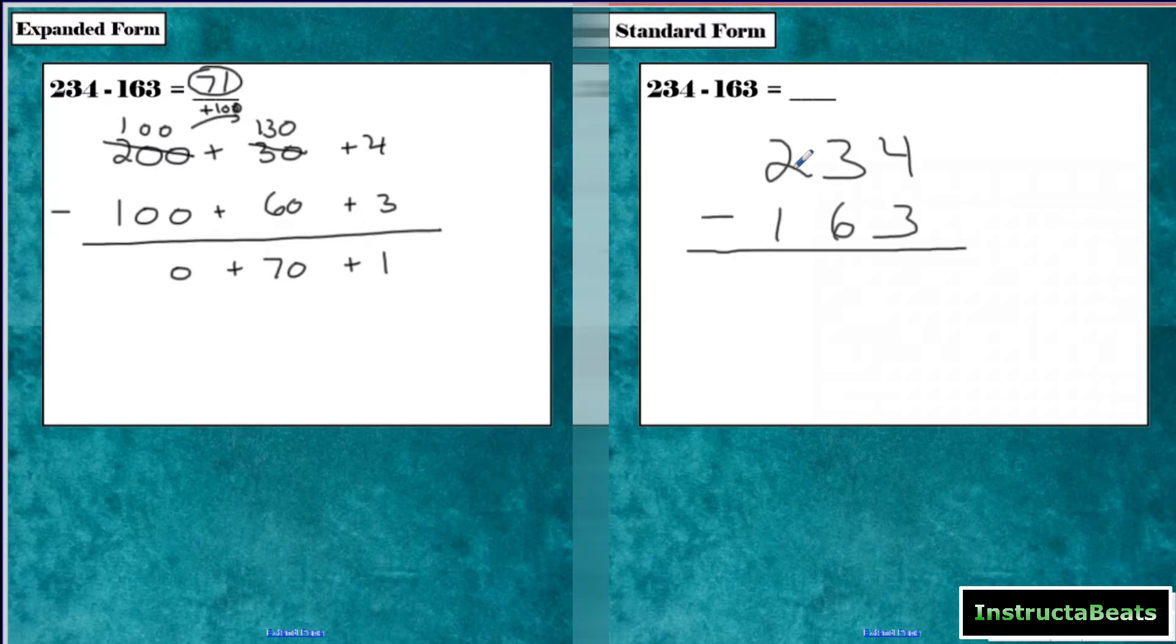We're still asking ourselves, more on the top or more on the floor? So 4 minus 3, more on the top, no need to stop. 4 minus 3 is 1.